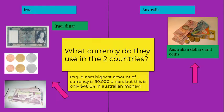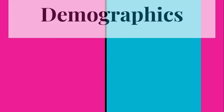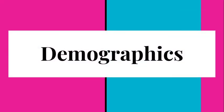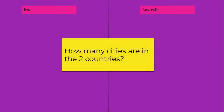Moving on, we will now discuss demographics. For demographics we have chosen to find out how many cities there are in both countries. In Australia there are 1,700 cities in total, and in Iraq there are 126 cities.